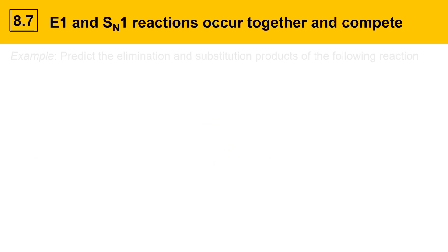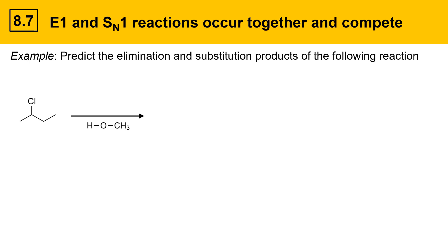Here's another example. Predict the elimination and substitution products of the following reaction. In this case, we're going to start with a secondary alkyl chloride, 2-chlorobutane, and we're going to have methanol be our second reactant. This is a secondary alkyl halide, and methanol is a weak base. Since it's a weak base, we know we're not going to get an E2 reaction, because E2 reactions require a strong base.